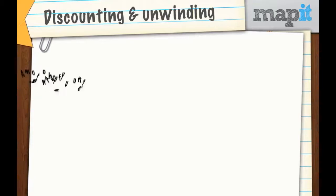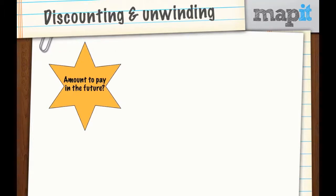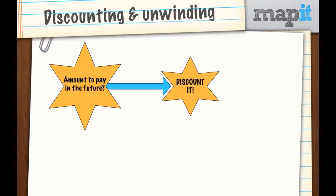So what are we asking here? The first thing is: when do you discount something? Well, you discount something if you've got an amount to pay in the future — more than a year away. You have a liability, something you're going to have to pay in more than a year. That amount isn't worth the same in today's terms because of, number one, inflation, and number two, the risk that you might not get the money at all. So we discount the amount and that makes it smaller — we bring it in at a smaller amount.